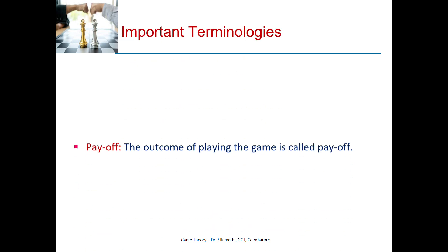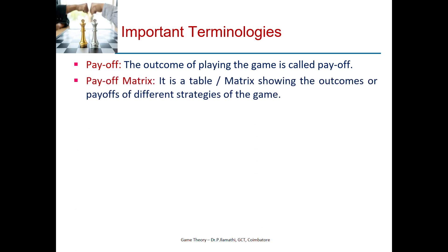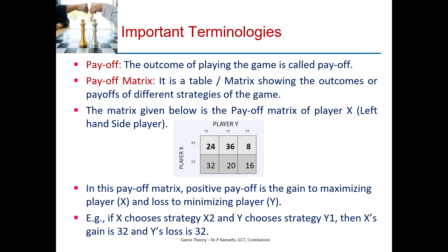Next is payoff. The outcome of playing the game is called the payoff. Then, the payoff matrix is a table or matrix showing the outcomes of different strategies of the game. A payoff matrix is given here — it is the payoff matrix of the left-hand side player, that is player X. If there is a positive value in the matrix, that means gain to the left-hand side player and loss to the other player. For example, if X chooses strategy X2 and Y chooses strategy Y1, then X's gain is 32 rupees and Y's loss is 32.